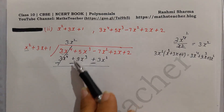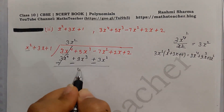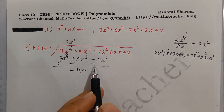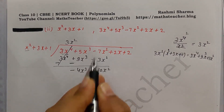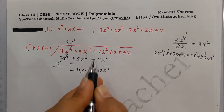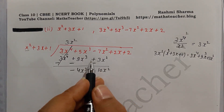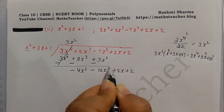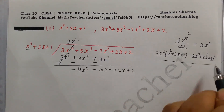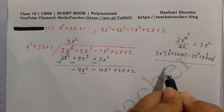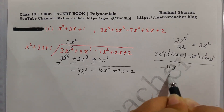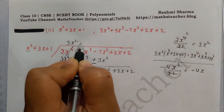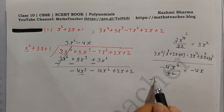After changing signs and subtracting: the first terms cancel. 5x³ minus 9x³ gives minus 4x³. Negative minus negative plus 7 plus 3 gives minus 10x². Now for the next step, we divide minus 4x³ by x², giving minus 4x as the next quotient term.